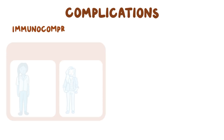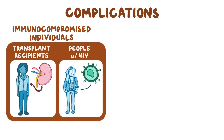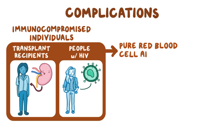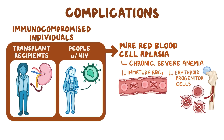Lastly, immunocompromised individuals, like organ transplant recipients and people with HIV, can develop a serious complication from parvovirus B19 called pure red blood cell aplasia. This is a form of chronic, severe anemia where there are very few immature red blood cells in circulation or erythroid progenitor cells in the bone marrow. Symptoms of pure red blood cell aplasia are similar to other forms of anemia, like lethargy and malaise.